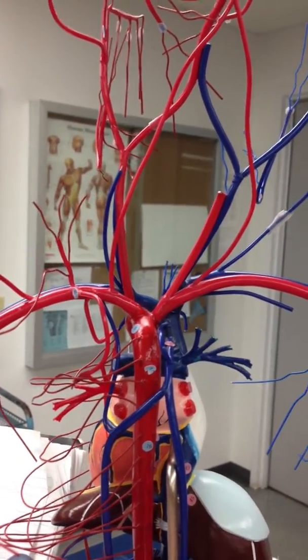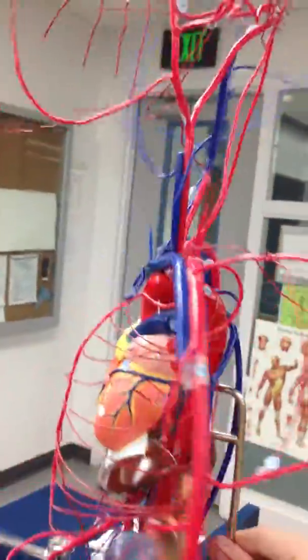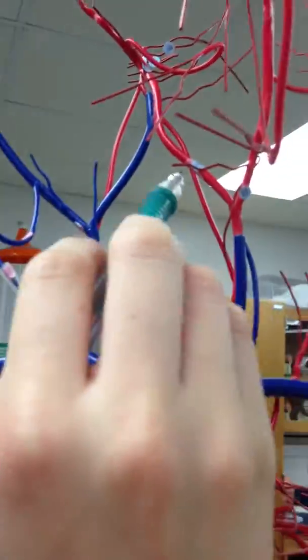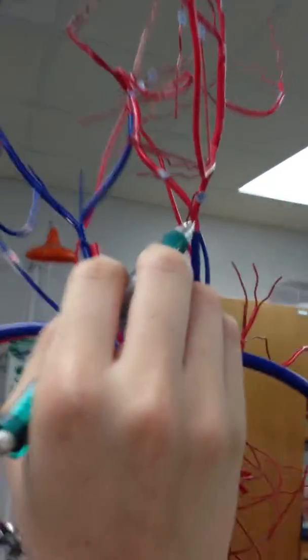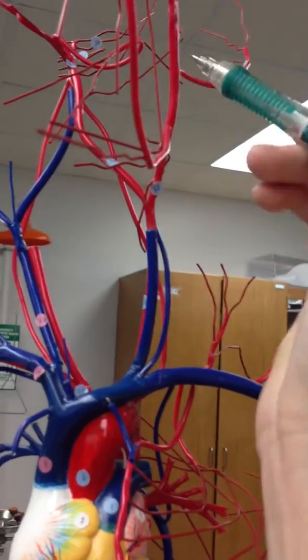The internal carotid is number 26, right here, and then the external carotid is number 12 on the lateral side.